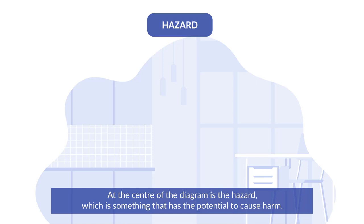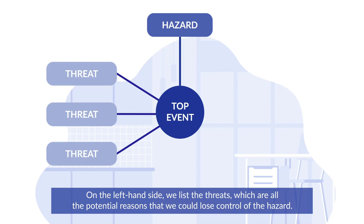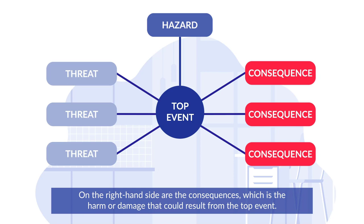At the centre of the diagram is the hazard, which is something that has the potential to cause harm. Below the hazard sits the top event, which describes the point at which control of the hazard is lost. On the left-hand side, we list the threats, which are all the potential reasons that we could lose control of the hazard.